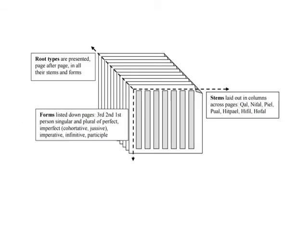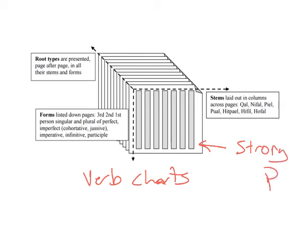Now, here's one more model to think through the verb as a whole, especially from the perspective of the student who has to manage their way through it. If you would pretend that this is a stack of pages that represents the verb charts, that you'll find in the back of any first-year grammar, which lists all the different kinds of the form of the word katal. And so on the first page will always be the strong verb, and usually it is represented by katal.